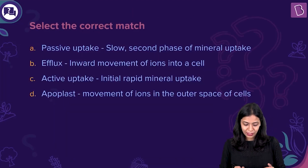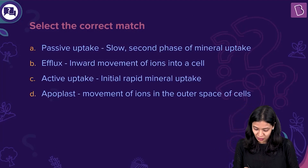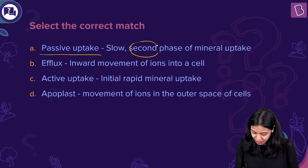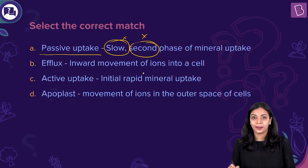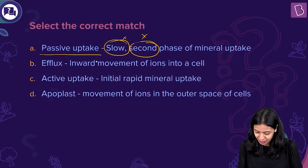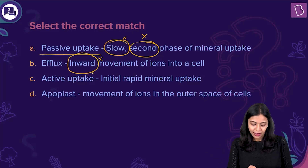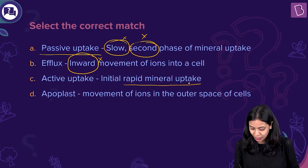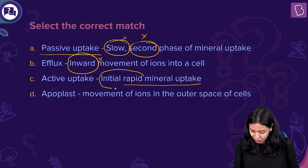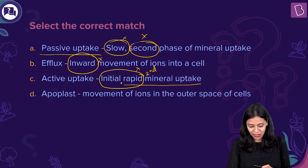Evaluating the options: Option A states passive uptake is the slow second phase of mineral uptake — this is incorrect because passive uptake is the first phase and it is not slow. Option B states efflux is the inward movement of ions into a cell — this is incorrect; influx is the inward movement, while efflux is the outward movement of ions from the cell. Option C states active uptake is the initial rapid mineral uptake — this is also incorrect; active uptake is not initial and not rapid; it is the second phase and relatively slow.